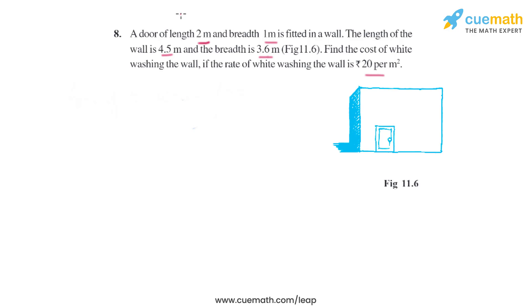In this question we have to find the cost of whitewashing the wall. As the wall is rectangular, we can easily find the area of the wall. Since a door is fitted in the wall, we won't whitewash the door, so we will find the area of the door and subtract it from the area of the wall. Basically we have to find the area in the red.